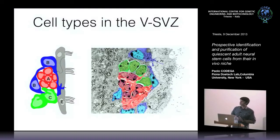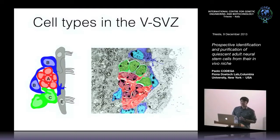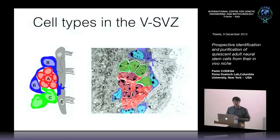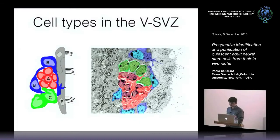There are also GFAP-expressing cells that have features of astrocytes, contact the ventricle, and express a primary cilium on their apical process. Then there are green cells, so-called C cells or transit amplifying cells, that are EGF receptor positive and rapidly dividing, as well as chains of neuroblasts in red. But how do these cell types integrate into the lineage?